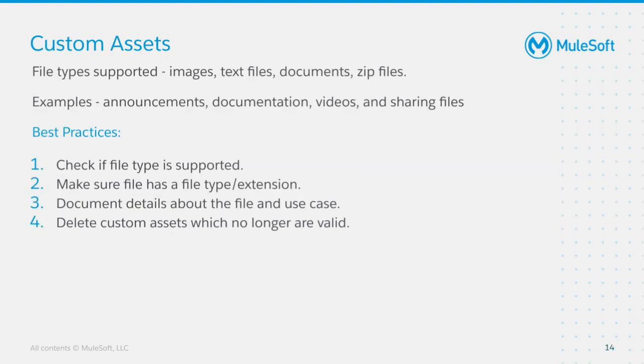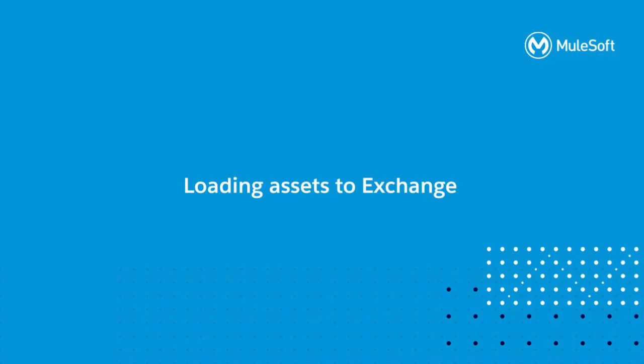Let's take a look at some of the details around custom assets. You can share these within your organization, such as announcements. It could be documentation of internal best practices, processes, guidelines, or even a video. You can also share files, and there is an option to attach a file. Some of the file types which are supported are images, text files, documents, and zip files. Some of the best practices are: always check if the file type is supported, make sure the file has a proper format or extension, and document the details of the file — for example, what the file is and what use case it covers in the description of the asset. And always make sure that you delete assets which are no longer valid.